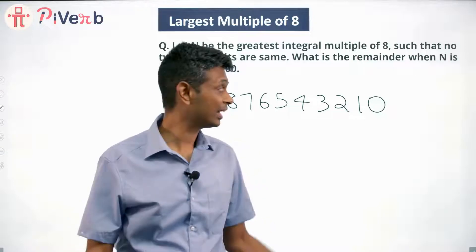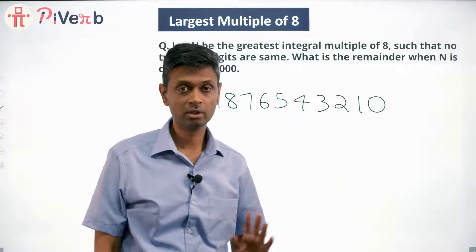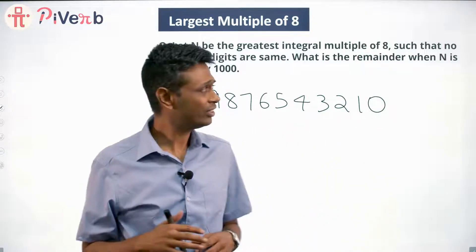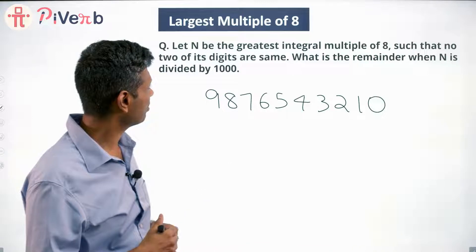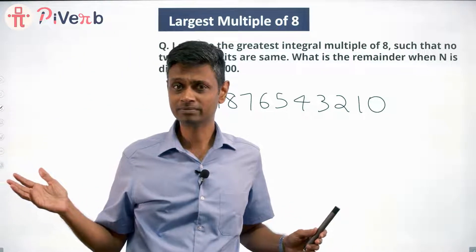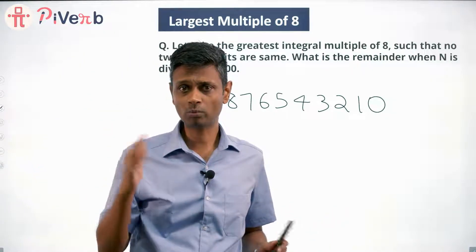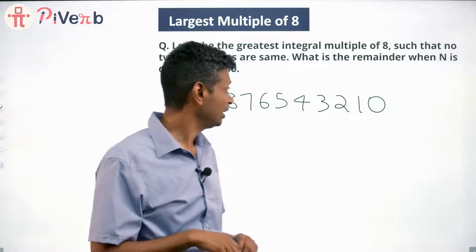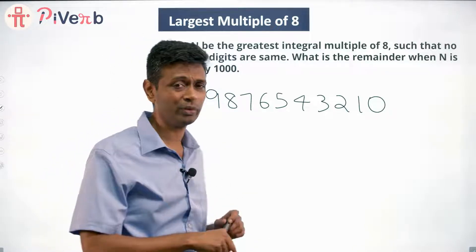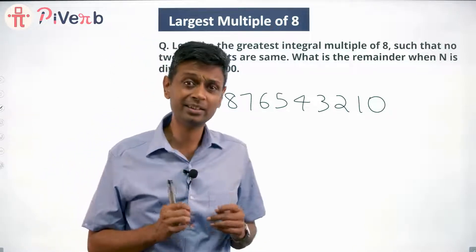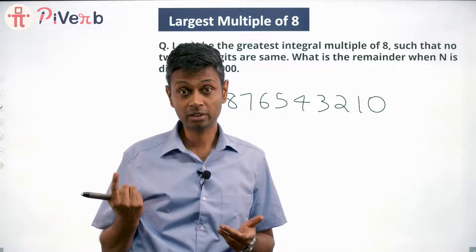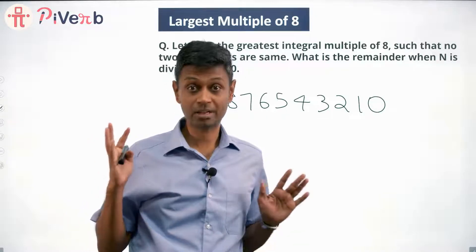We cannot have an 11-digit number, so the number we are looking for is a 10-digit number. If this number — 9876543210 — happens to be a multiple of 8, we're done. If it is not, then we'll have to tweak this and find a number slightly less than this that also happens to be a multiple of 8. Then we will have achieved our objective.